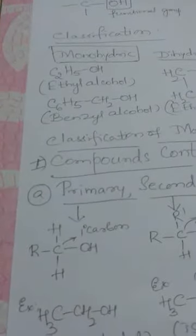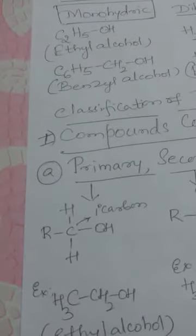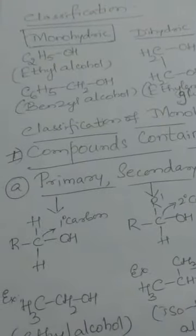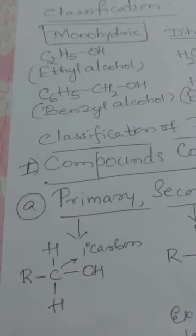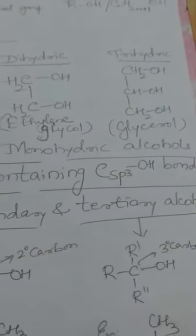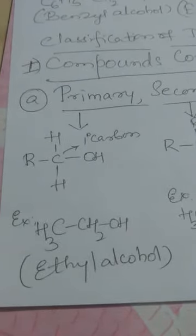The first set is primary, secondary, and tertiary alcohols. This classification depends on whether the hydroxy group is attached to a primary, secondary, or tertiary carbon atom. An example of a primary alcohol is ethyl alcohol (CH₃CH₂OH). An example of a secondary alcohol is isopropyl alcohol (CH₃CHOHCH₃). An example of a tertiary alcohol is (CH₃)₃COH.